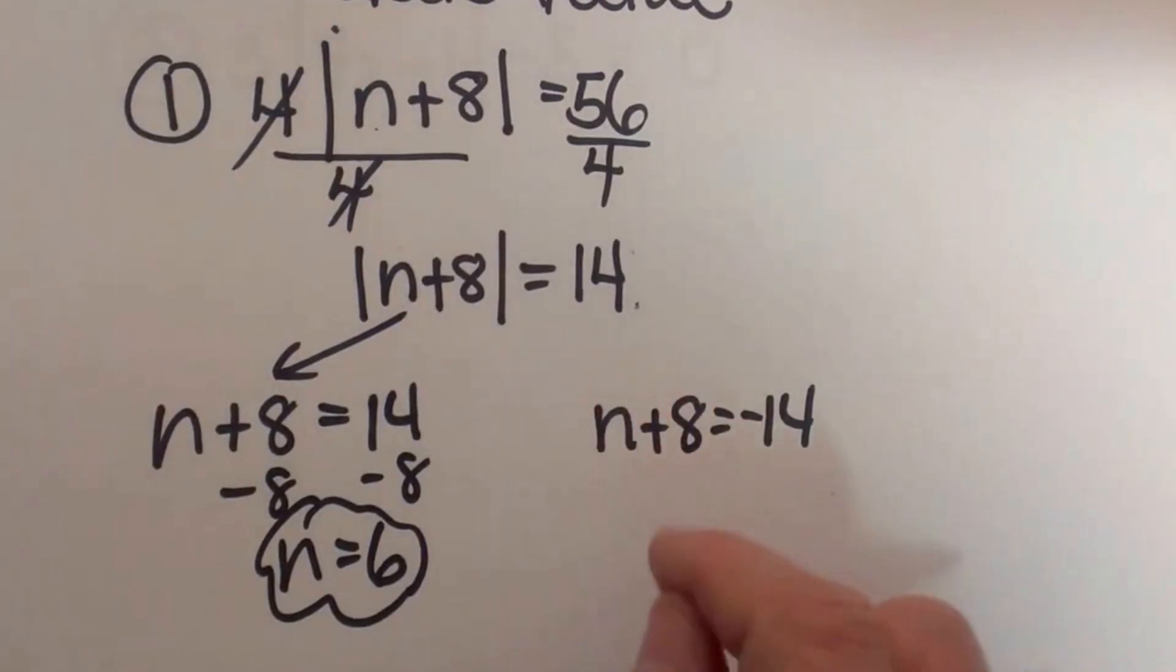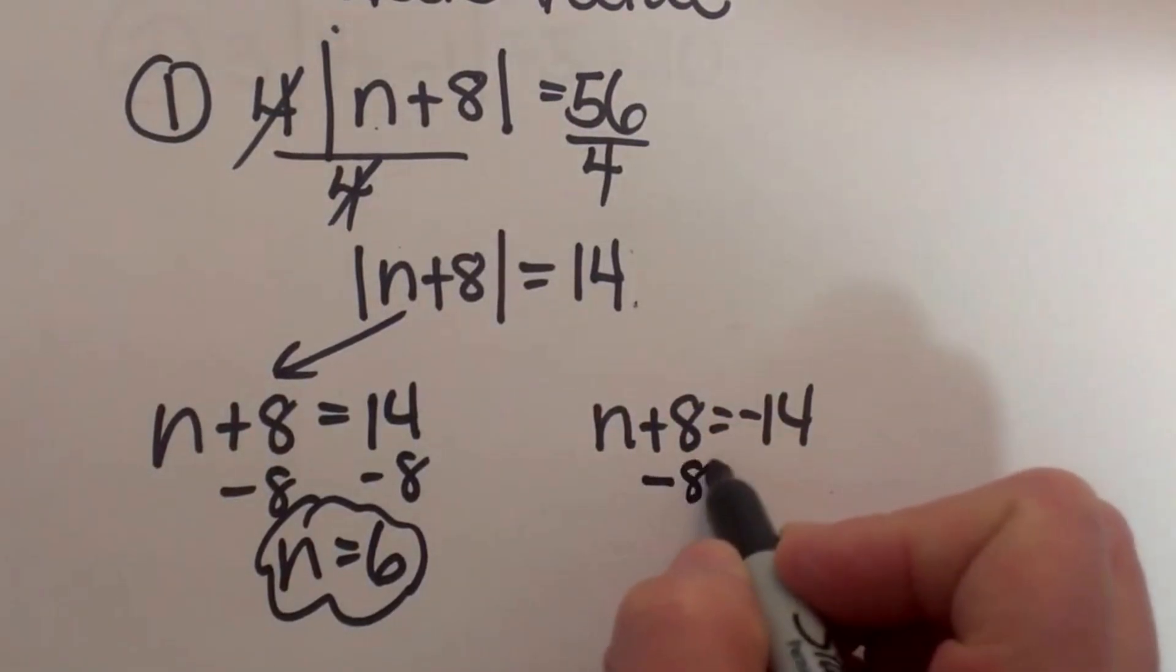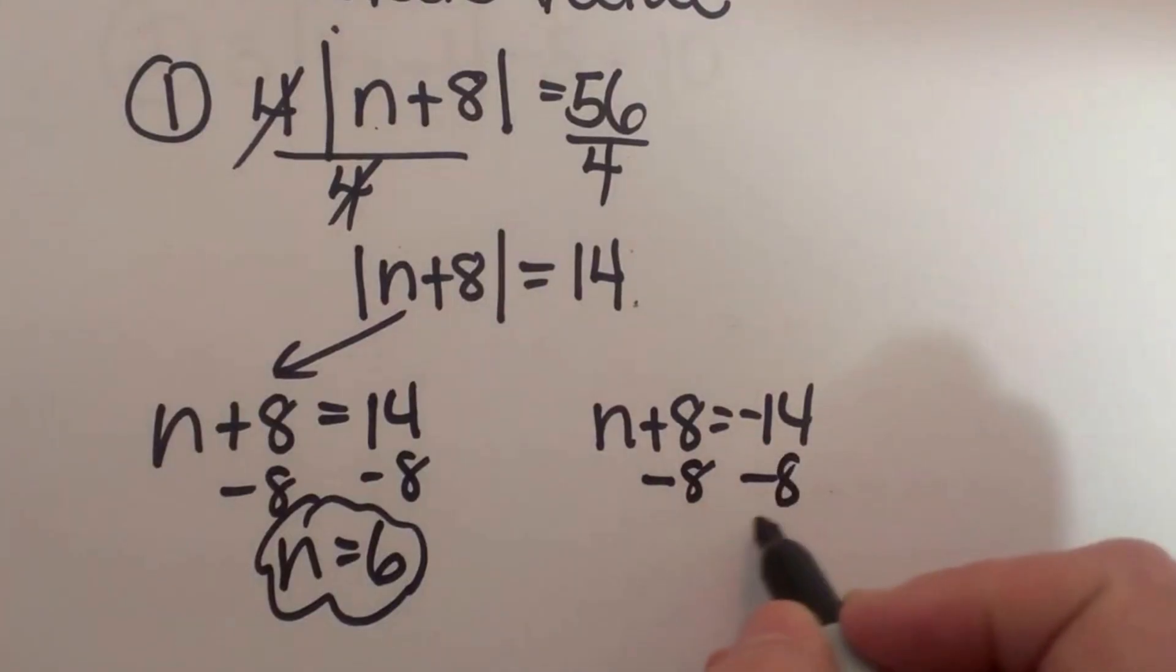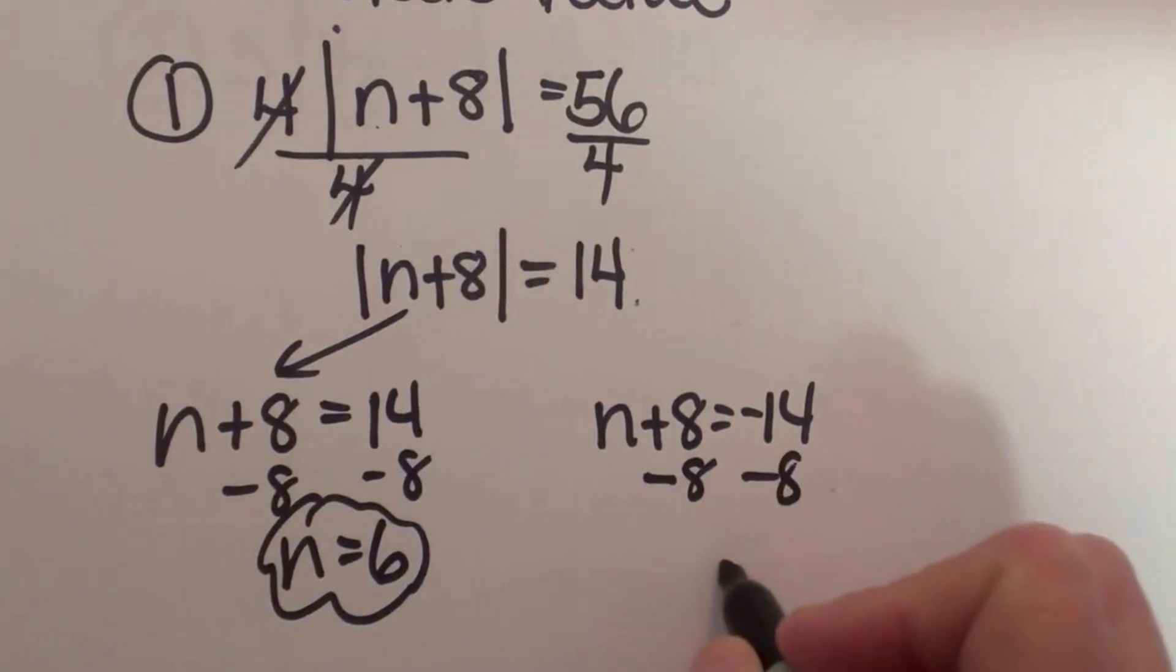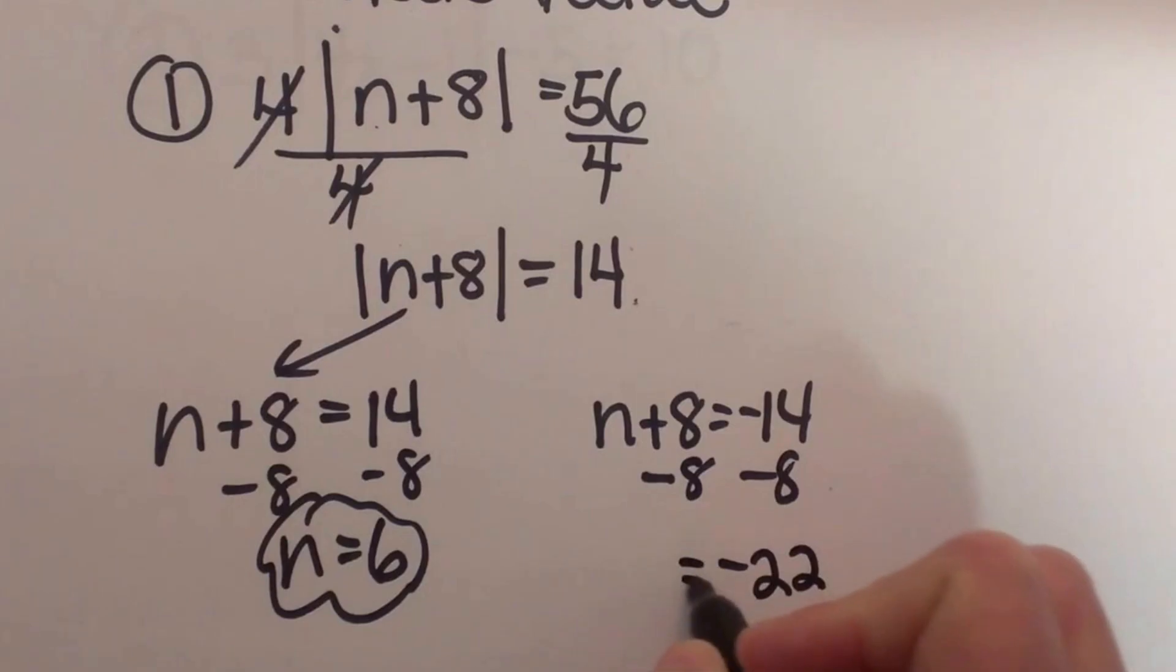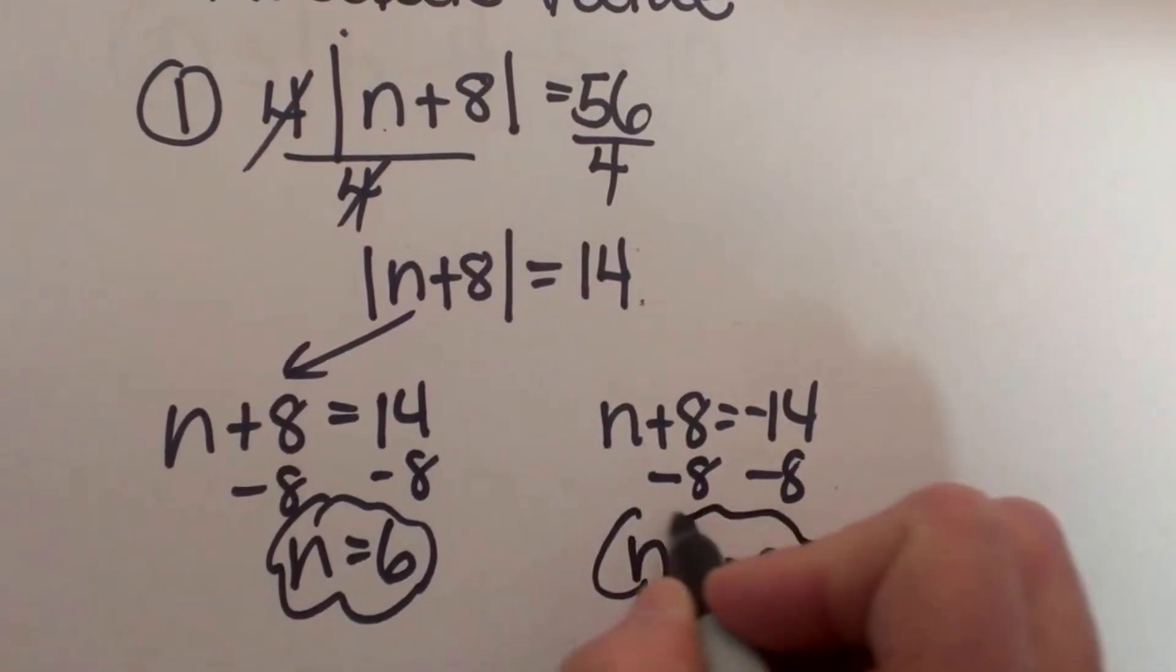Now I have to go over here and do the same thing. I subtract 8, but this time I am subtracting it from negative 14, so I actually end up adding those and that is negative 22. So I get n is equal to negative 22. So I have two solutions.